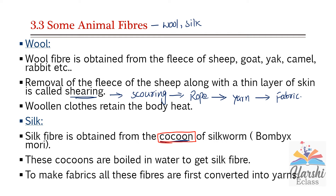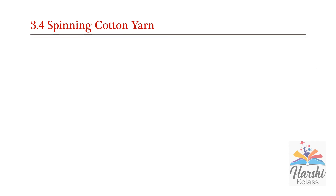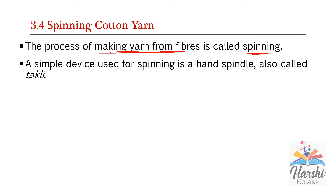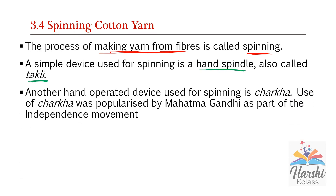To make fabrics, all these fibers are first converted into yarn, and from the yarn fabric will be made. Spinning cotton yarn — from the cotton fiber, yarn is going to be prepared through spinning. The process of making yarn from fibers is called spinning. Pull some cotton fiber and twist them continuously so fibers come close to each other, hold each other tightly, and we get a long string-like structure called yarn.